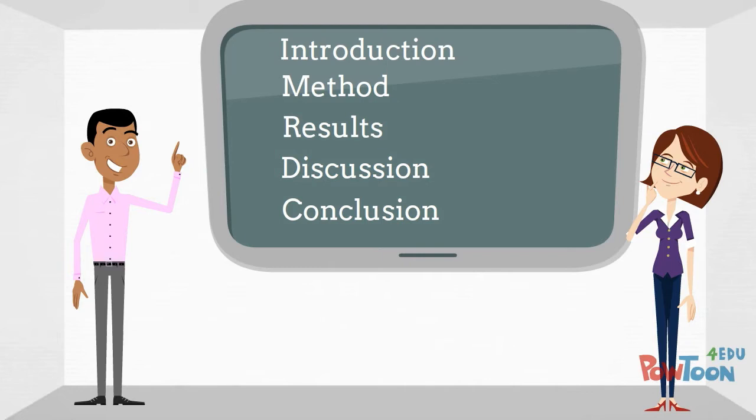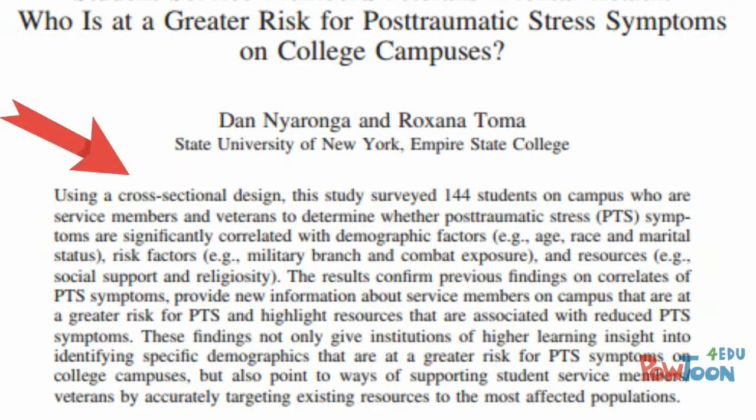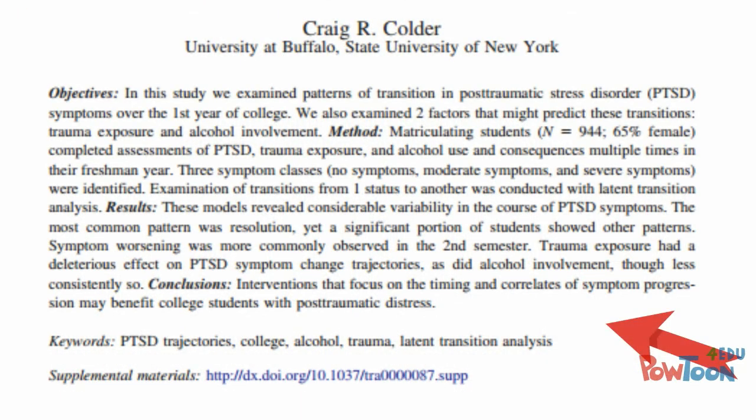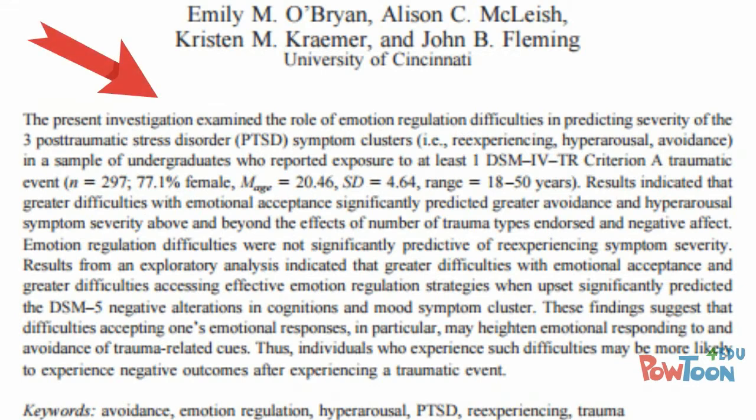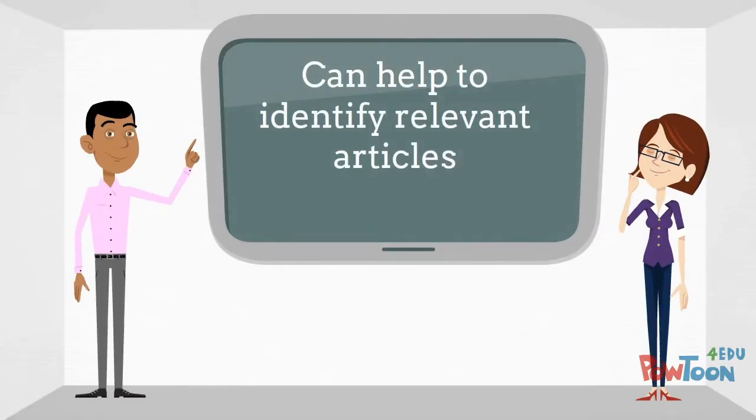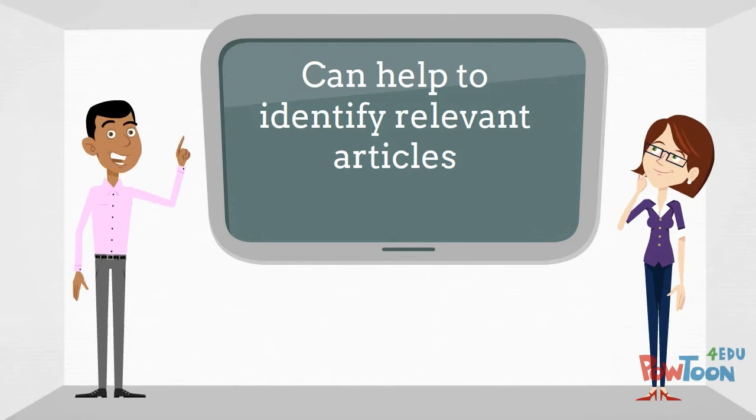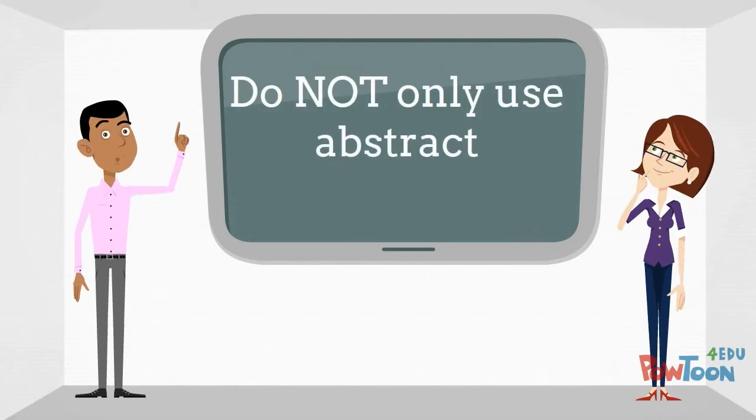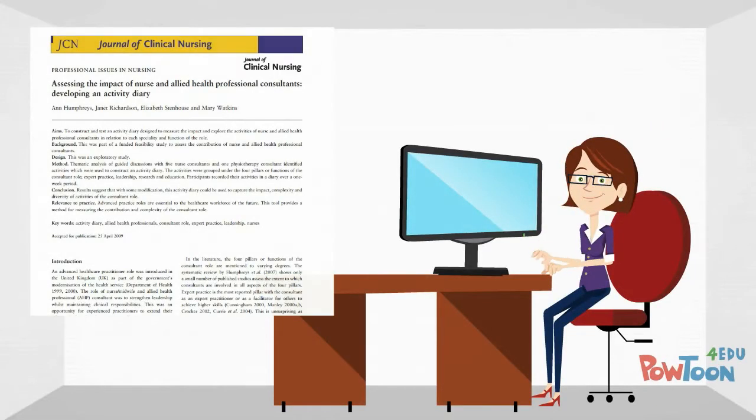Most scholarly articles begin with an abstract. This is a short paragraph in which the author briefly explains what the article is about and describes any significant findings. While the abstract can be valuable for identifying relevant articles, it's very important that you do not rely only on the abstract for your understanding of the article. You need to find and review the entire article.